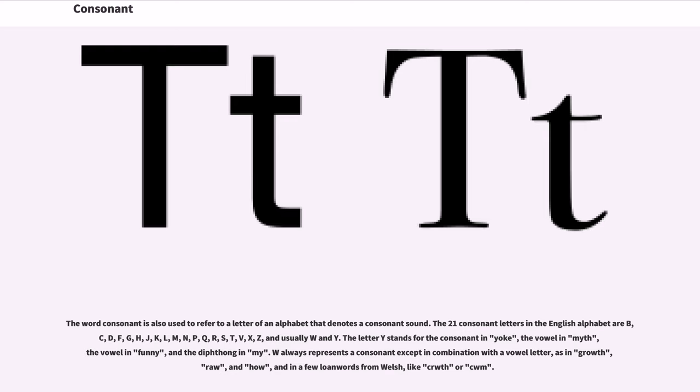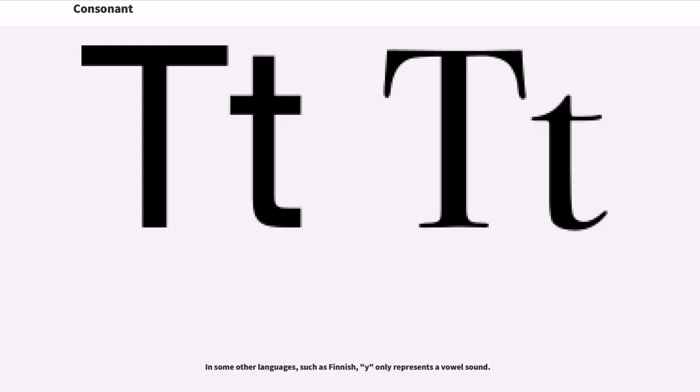The letter Y stands for the consonant in 'yoke', the vowel in 'myth', the vowel in 'funny', and the diphthong in 'my'. W always represents a consonant except in combination with a vowel letter, as in 'growth', 'raw', and 'how', and in a few loan words from Welsh like 'crwth' or 'cwm'. In some other languages, such as Finnish, Y only represents a vowel sound.